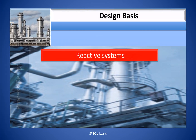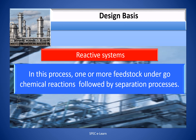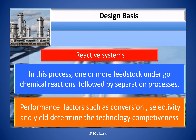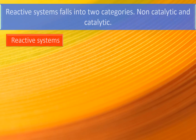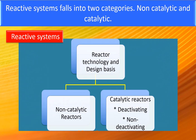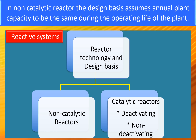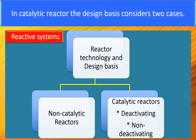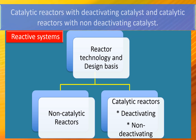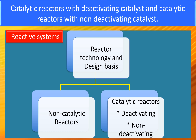Reactive systems: In this process, one or more feedstocks undergo chemical reactions followed by separation processes. Performance factors such as conversion, selectivity, and yield determine the technology competitiveness. Reactive systems fall into two categories — non-catalytic and catalytic. In a non-catalytic reactor, the design basis assumes annual plant capacity to be the same during the operating life of the plant. In a catalytic reactor, the design basis considers two cases: catalytic reactors with deactivating catalysts and catalytic reactors with non-deactivating catalysts.